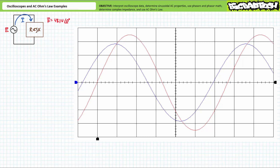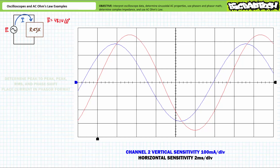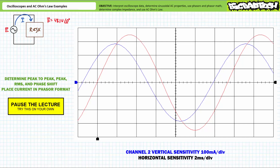Let's now do the same thing for current data on channel two in blue. Channel two is employing a vertical sensitivity of 0.1 amps per division and a horizontal sensitivity of two milliseconds per division. Again, O-scopes typically have five subdivisions within a full division. See if you can determine the current peak-to-peak value, the current peak value, the current RMS value, and the phase shift of current with respect to source voltage. Once you've got these properties, put current in phasor format. Pause the lecture and try this on your own.